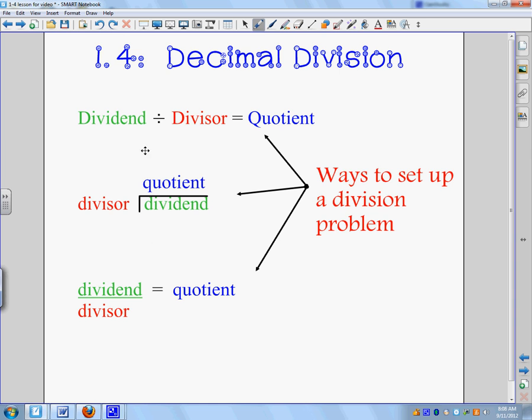Alright, so first you have a dividend divided by a divisor equals a quotient. So what this means is just like this, if I wrote 12 divided by 3, it equals 4. That is one way you can write a division problem.